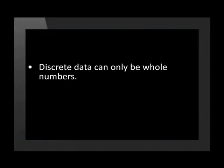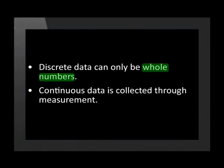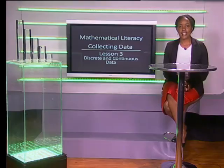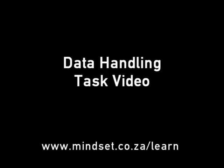Now that we've established the difference between continuous and discrete data, we are now ready to draw graphs. That was a very clear explanation, but let's recap. Discrete data is data that can only be counted in whole numbers. Continuous data is data that is collected using measurement, so it can have decimal places and fractions. Please refer to the task for this section in the data handling task video. You can learn more about data handling on our website, www.mindset.co.za/learn. Goodbye.